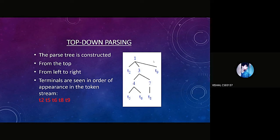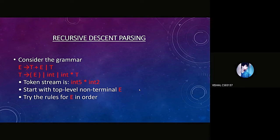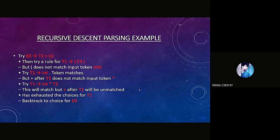My topic is top-down parsing. Top-down parsing constructs the parse tree from the top, from left to right. Terminals are seen in order of appearance in the token stream, like t2, t5, t6, t8, and t9, as shown in the diagram. Consider the grammar with recursive descent parsing: E → T + E, T → int * T. The token stream is int * int + int. We start with the top-level non-terminal E and try the rules in order.